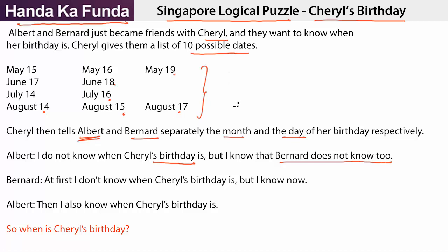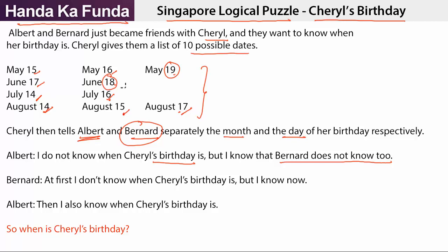What are the unique dates? Bernard can only know a date if it's unique. The unique dates are 18 and 19 — everything else is repeating. May 15, August 15, July 14, August 14, May 16, July 16, June 17, August 17. The dates which are not repeating are 18 and 19. So if Albert knows for a fact that it is not 18 and not 19, how is that possible? How can Albert know that?